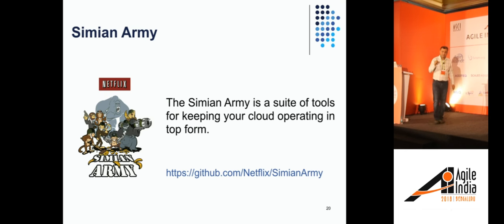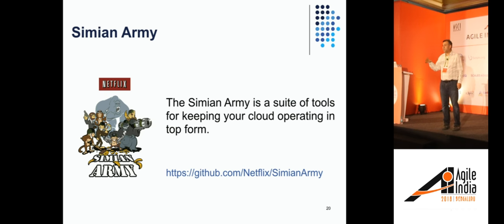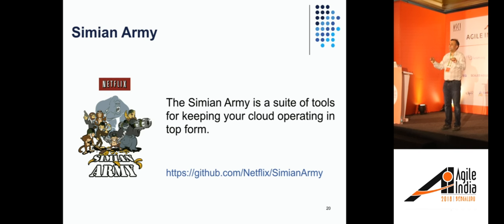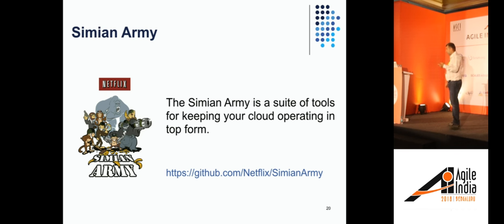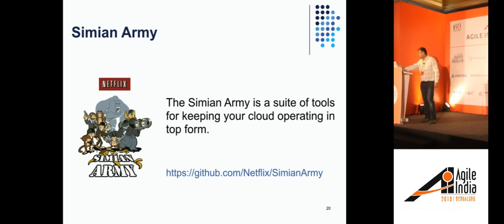The Simian Army is a set of tools — Chaos Monkey, Chaos Kong, and a whole bunch of others — that work together to essentially try to destruct your system. If you can survive this army, you know that when an actual outage happens you'll be fine. There's a GitHub link for Netflix where you can check out what the Simian Army is all about.